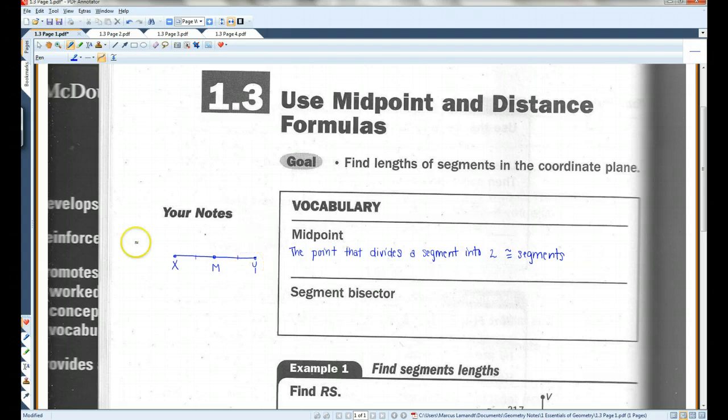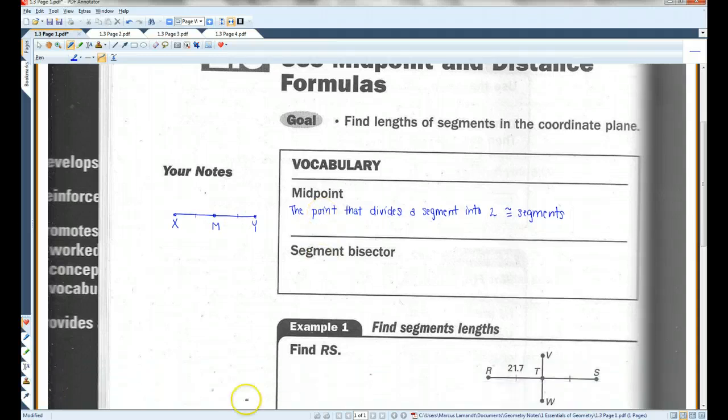A segment bisector is pretty much the same thing, except that it doesn't have to be a point. It could be a point, or a ray, or a line, or a line segment, or even a plane.